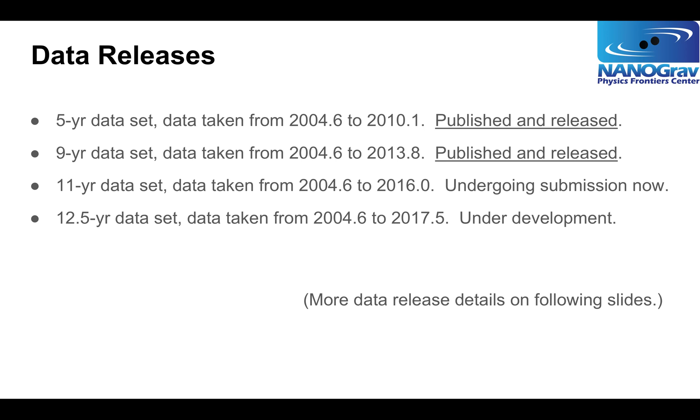We plan going forward to make data releases every year and a half. Here's our past history of data releases. We have what was called the five-year data set, which is data taken over the first five years of NANOGrav from 2004 to 2010. That was followed by the nine-year data set, the 11-year data set, which is just undergoing submission now, and the 12.5-year data set, which we're just starting to explore.